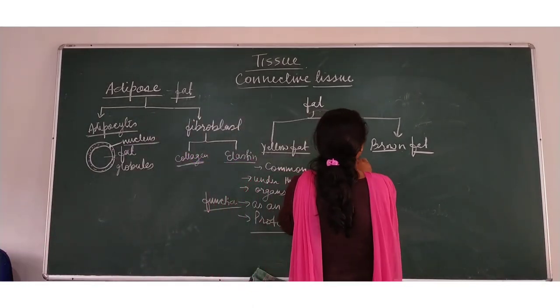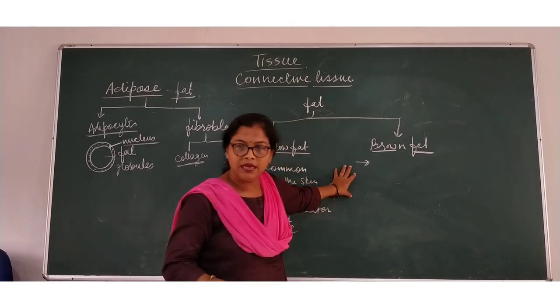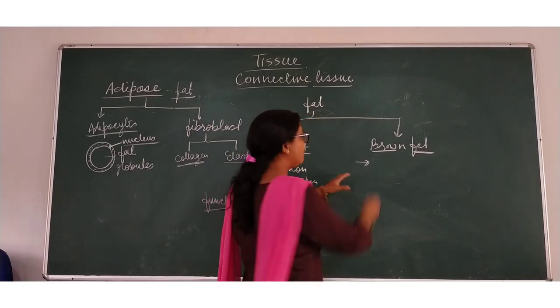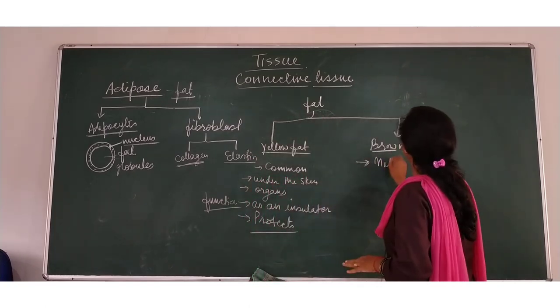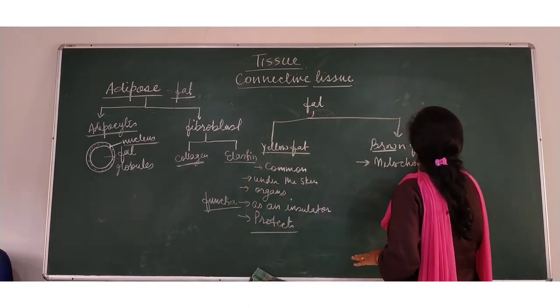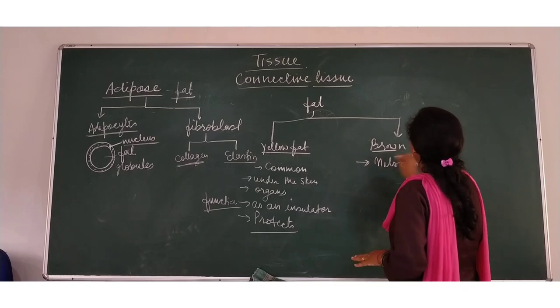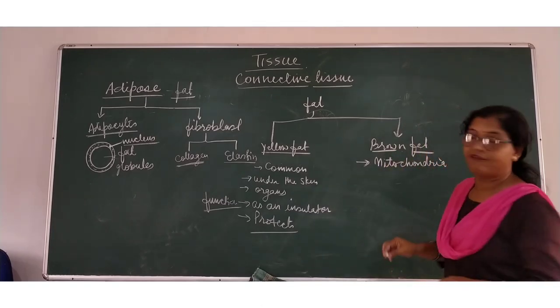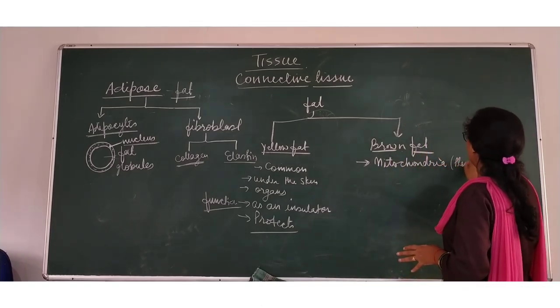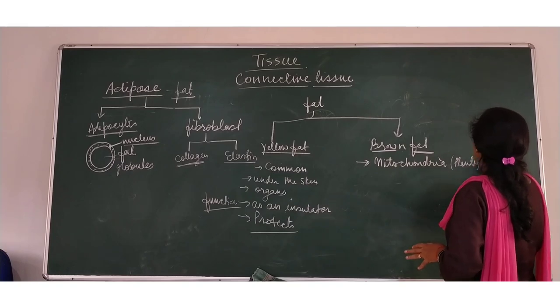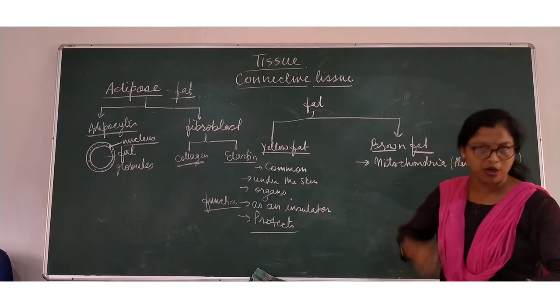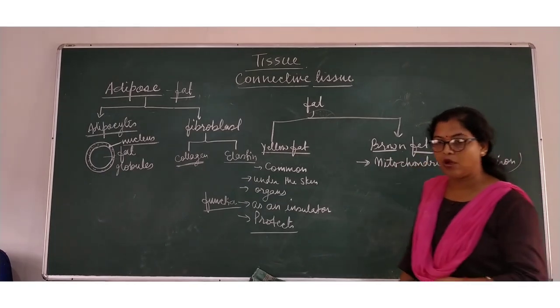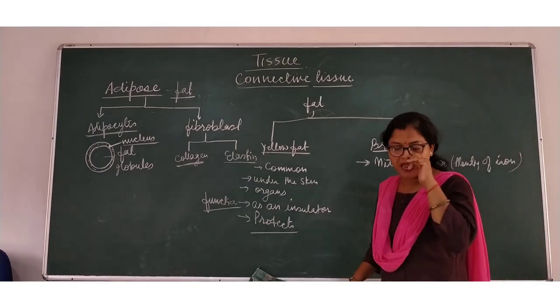Now what is this brown fat? Brown fat is actually not common, it is rare. And why it looks brown? Because the mitochondria of brown fat has plenty of iron, and due to that it provides color which is brown.